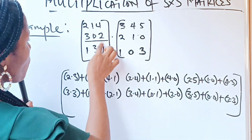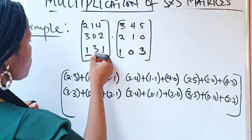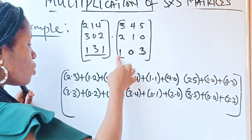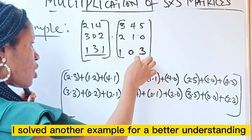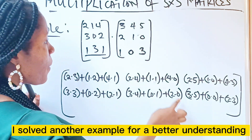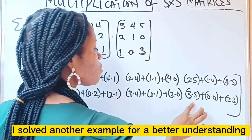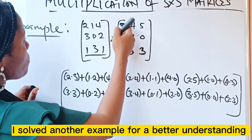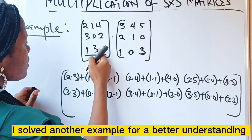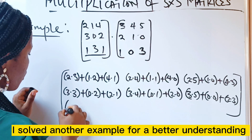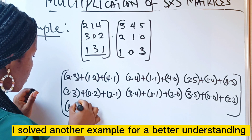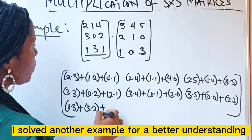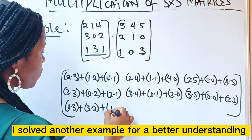We are through with the second row. Now going over to the third row. As usual, we use it to multiply the first column to form the first number: 1 times 3, plus 3 times 2, plus 1 times 1.